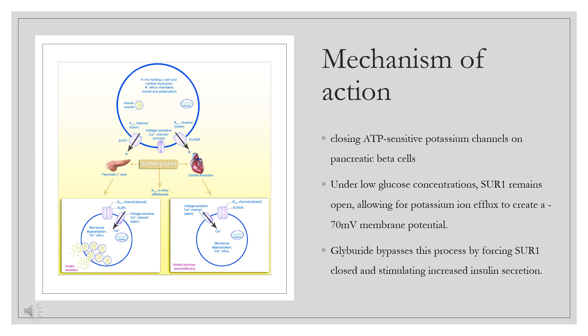Mechanism of action: Sulfonylureas lower blood glucose in patients with NIDM by directly stimulating the acute release of insulin from functioning beta cells of pancreatic islet tissue by an unknown process that involves a sulfonylurea receptor 1 on the beta cell. Sulfonylureas inhibit the ATP-dependent potassium channels on the beta cell membrane, reducing potassium efflux, which results in depolarization and calcium influx, calcium-calmodulin binding, kinase activation, and release of insulin-containing granules by exocytosis — an effect similar to that of glucose.